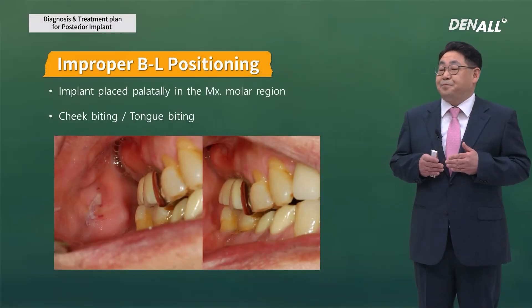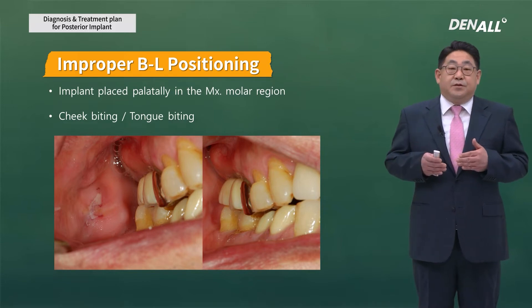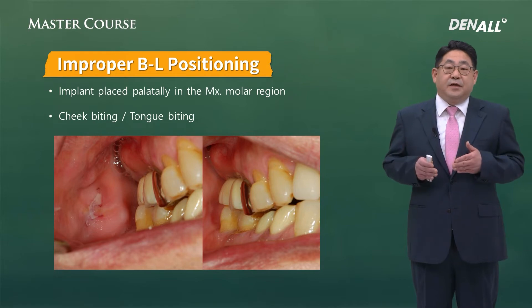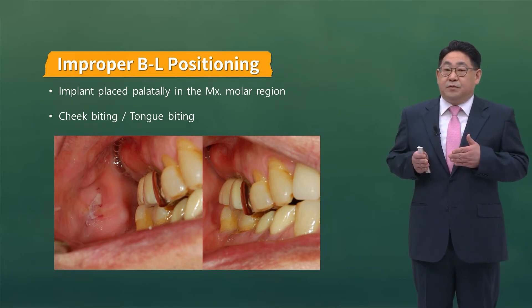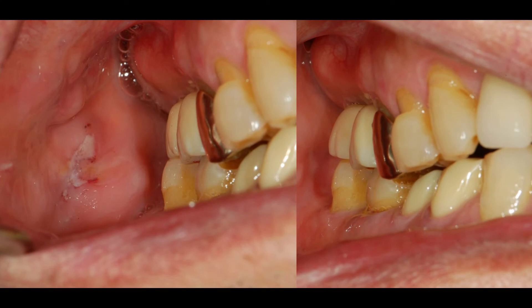In the next case, the implant has been placed more palatally. If you look at the image on the left, the buccal contour is ordinary. However, due to inappropriate overlap, cheek biting was inevitable. As shown on the right, even though there is an over-contour on the buccal side, we need to refabricate the prosthesis to provide a horizontal overlap to prevent cheek biting. There can be increased food impaction due to over-contour and patient discomfort can increase, so you need to inform the patient of this ahead of time.